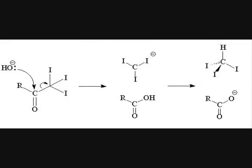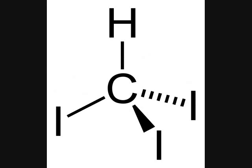Then the hydroxide from the base replaced that halogenated carbon. Last, the hydrogen on this new carboxylic acid transfers to the triiodomethanide ion that we just formed, making acetate and iodoform.